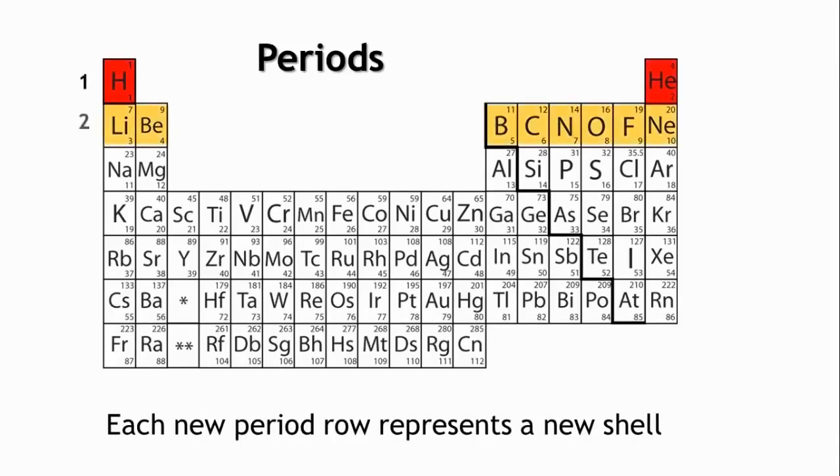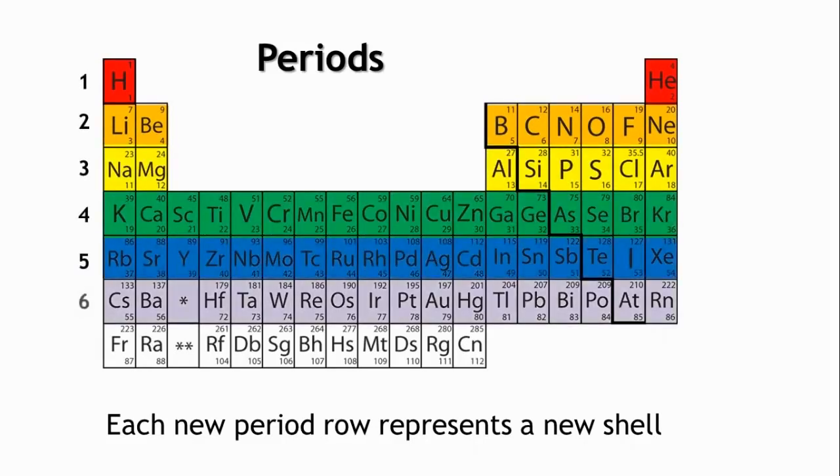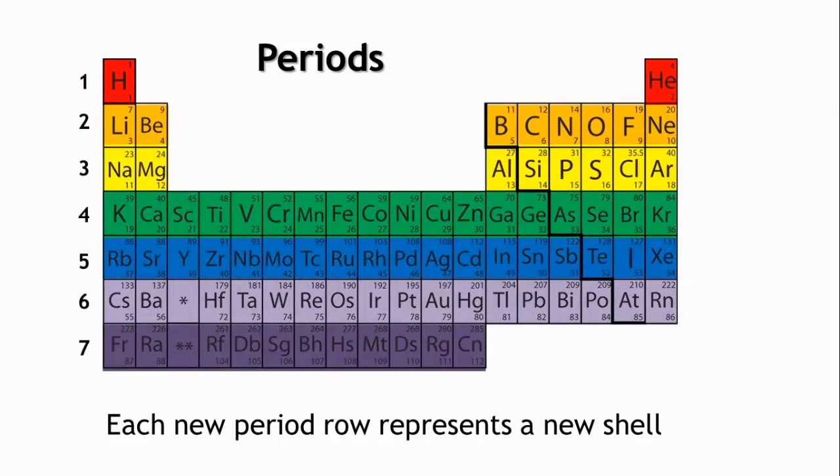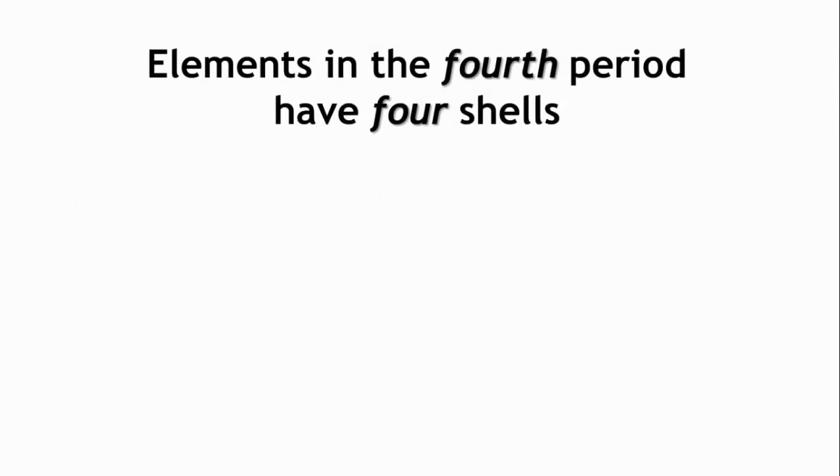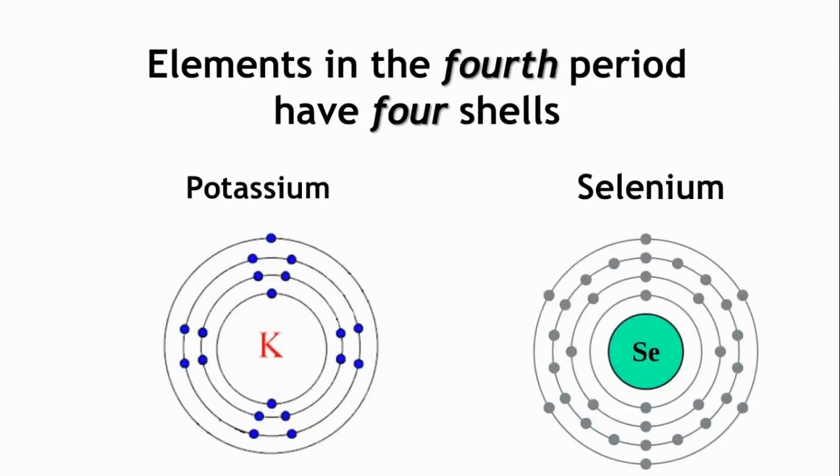Elements in the first period have one shell, and as we go down, the shells increase. Hydrogen is in the first period. It has one shell. Potassium is in the fourth period and has four energy shells, as do all the other elements in this period.